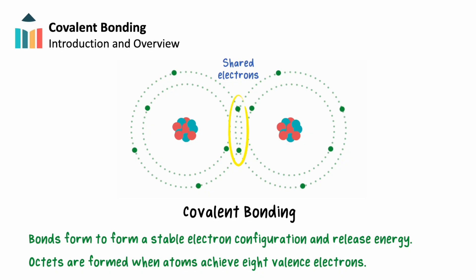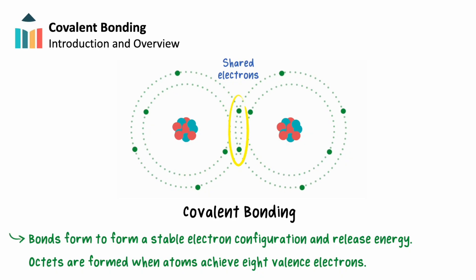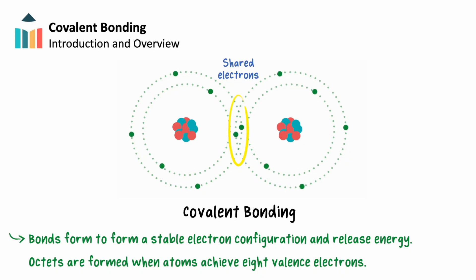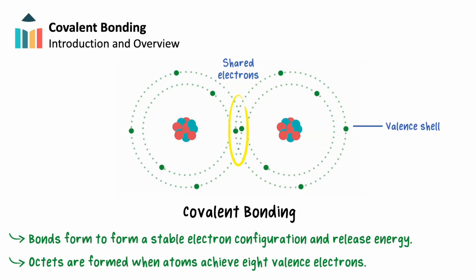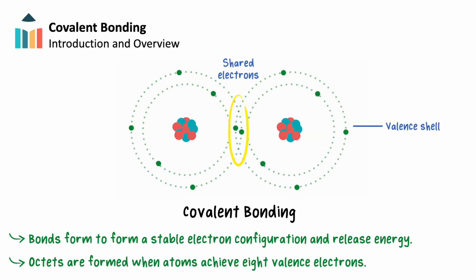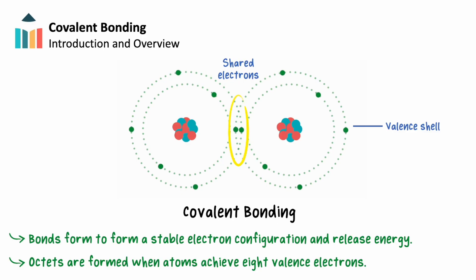By sharing electrons, atoms achieve a more stable electron configuration and release energy, often forming an octet, where each atom has their outer valence shell filled with 8 electrons in total, filling their s and p sublevels.